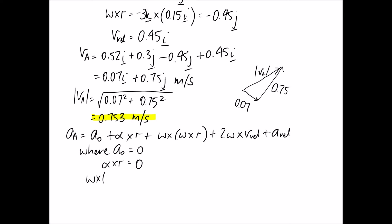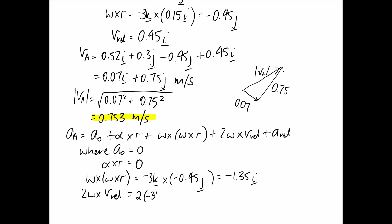The normal acceleration term is omega cross (omega cross r). With omega = −3k and omega cross r already computed as −0.45j, we multiply: (−3k) × (−0.45j) = −1.35i. The Coriolis term is 2·omega × V_rel: 2 × (−3k) × (0.45i) = −2.7j.